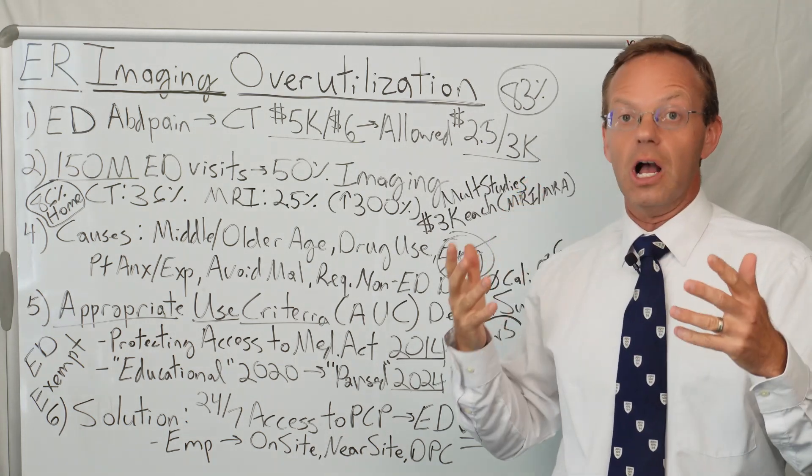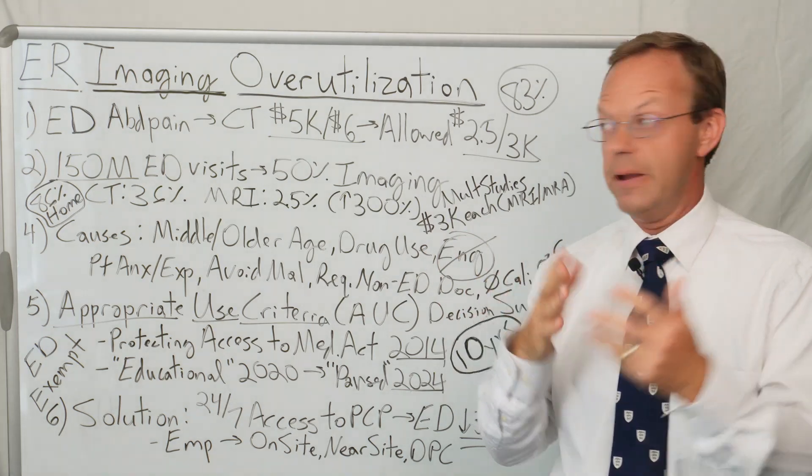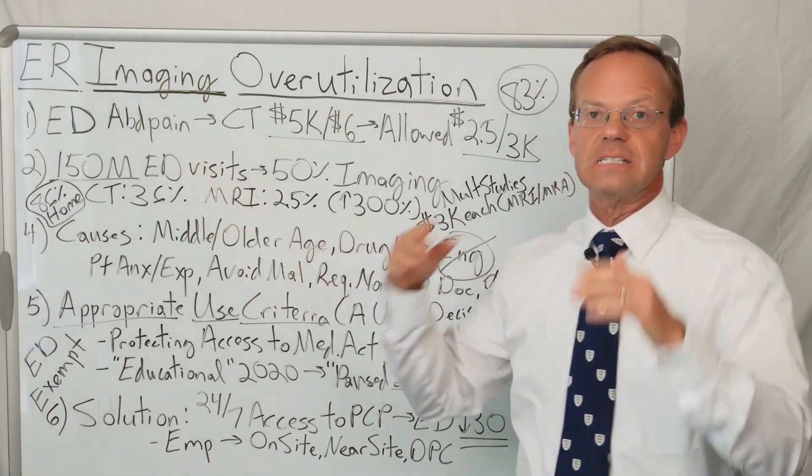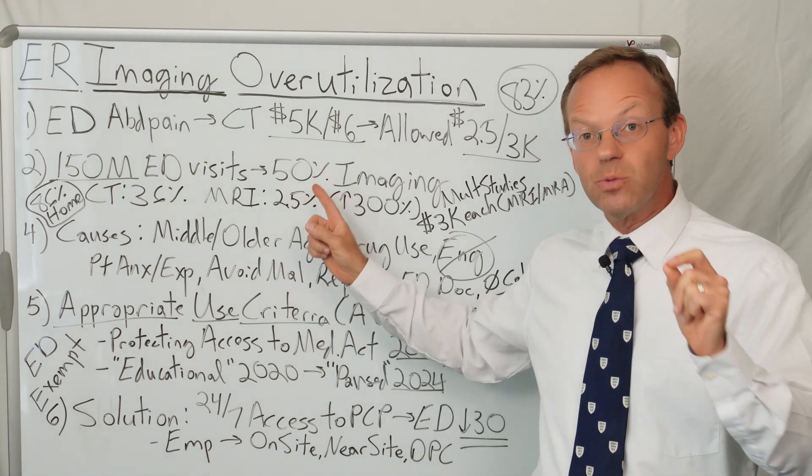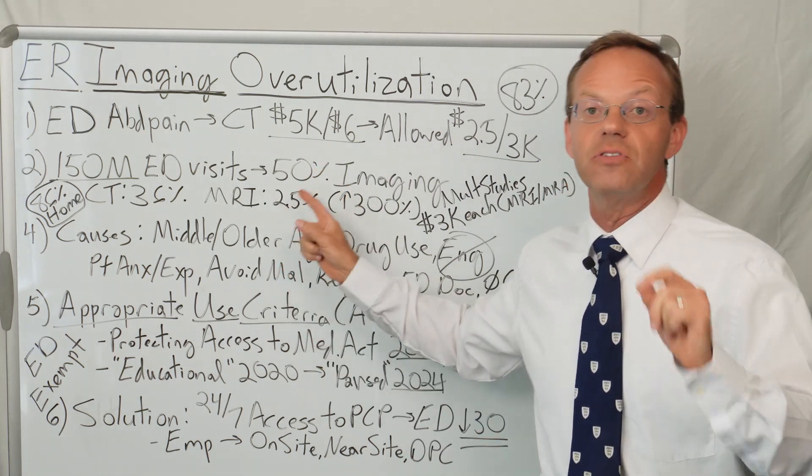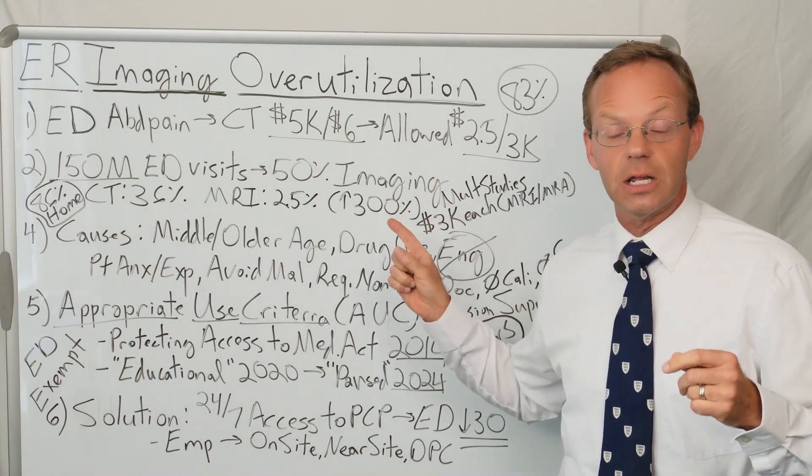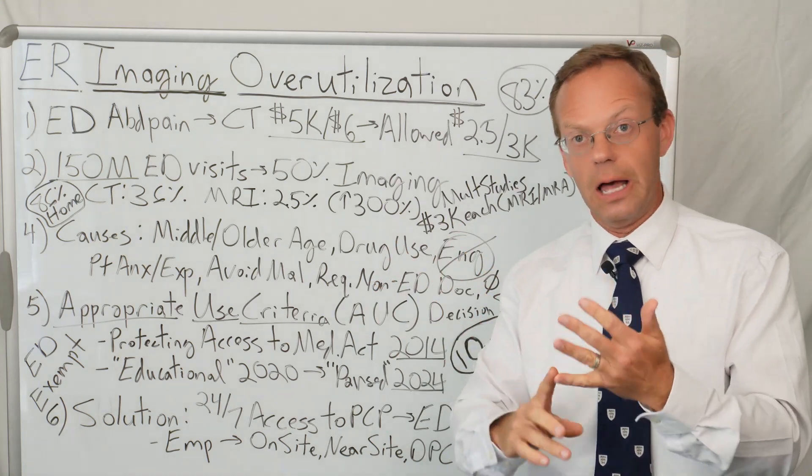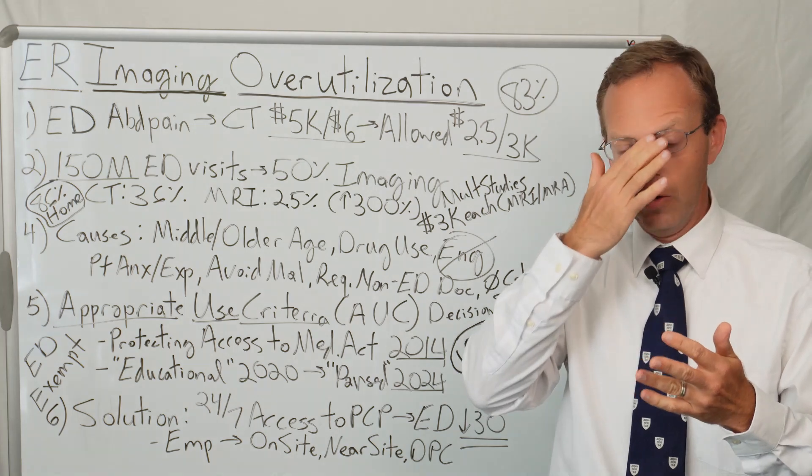Let's talk about ER visits and imaging in America. There are about 150 million ER visits every year, and 50% of those ER visits involve some type of imaging. It could be an x-ray, it could be an ultrasound, or it could be advanced imaging like a CT scan or an MRI.